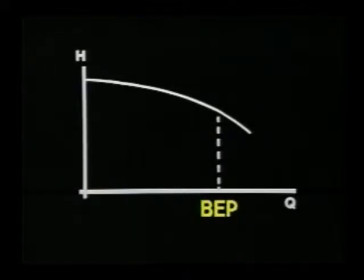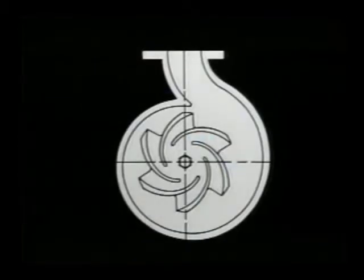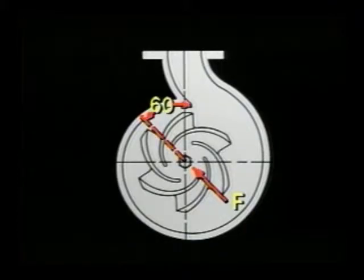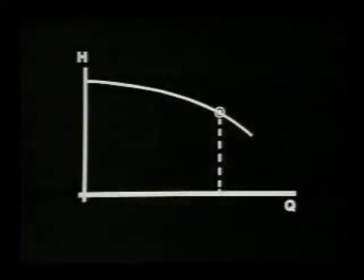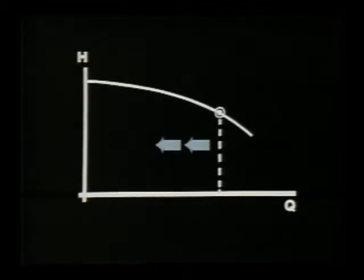When the pump operates at some other capacity, the balance of the hydraulic forces in the wet end is compromised, and a resulting unbalanced hydraulic force is set up. This is called the impeller radial force, and it acts through the impeller on a plane approximately 60 degrees to the cut water.